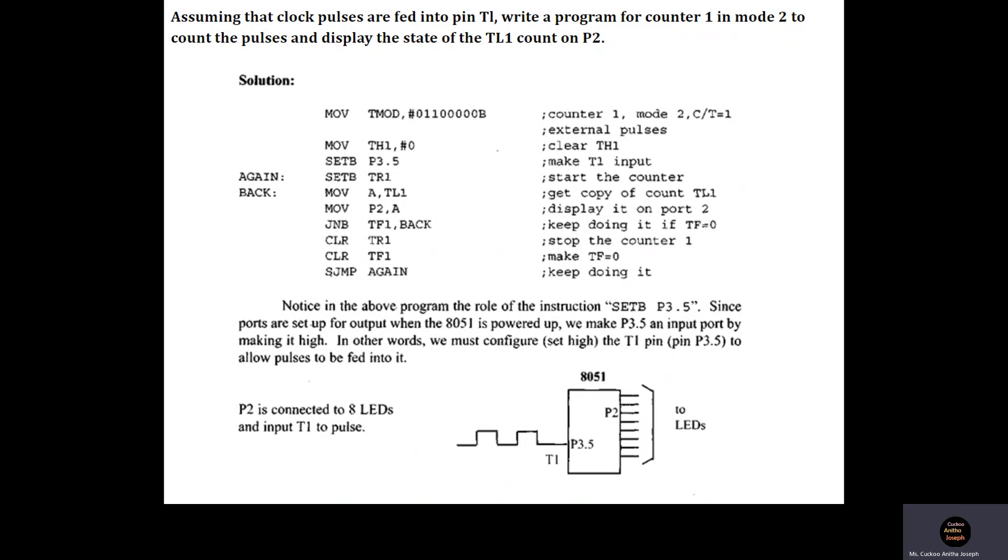Instead of writing the instruction SJMP AGAIN, we can also write some code so that a message is being displayed. Suppose, imagine that this is the case of a parking lot where you have an infrared sensor which produces a pulse whenever a vehicle enters the parking lot, and that is being counted.